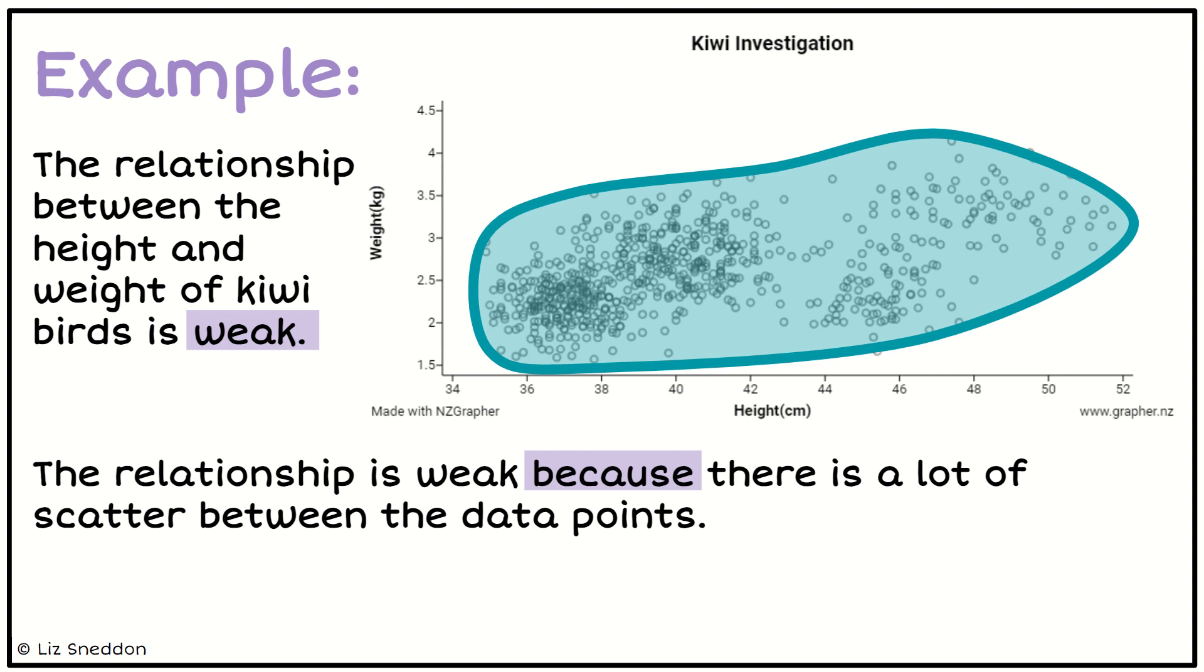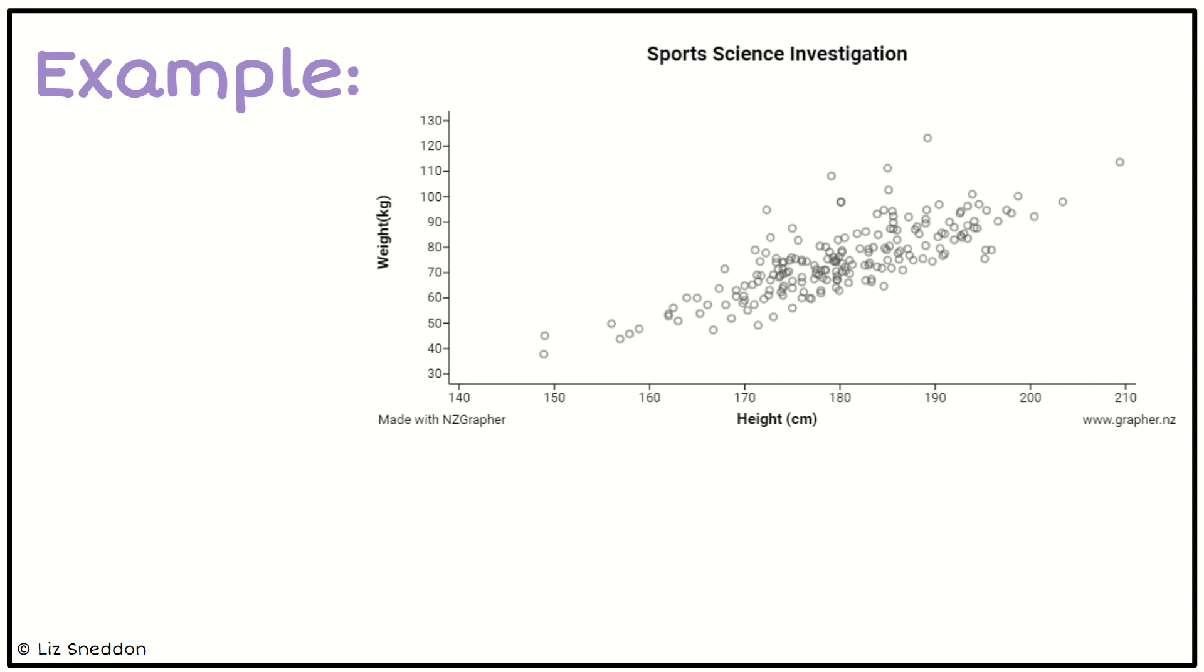So that's the second example. Let's have a look at one more. So this is looking at the height, the relationship between the height and weight for some athletes from the Australian Institute of Sport. So we're looking to see is there a relationship between them, so we draw our blob around that.